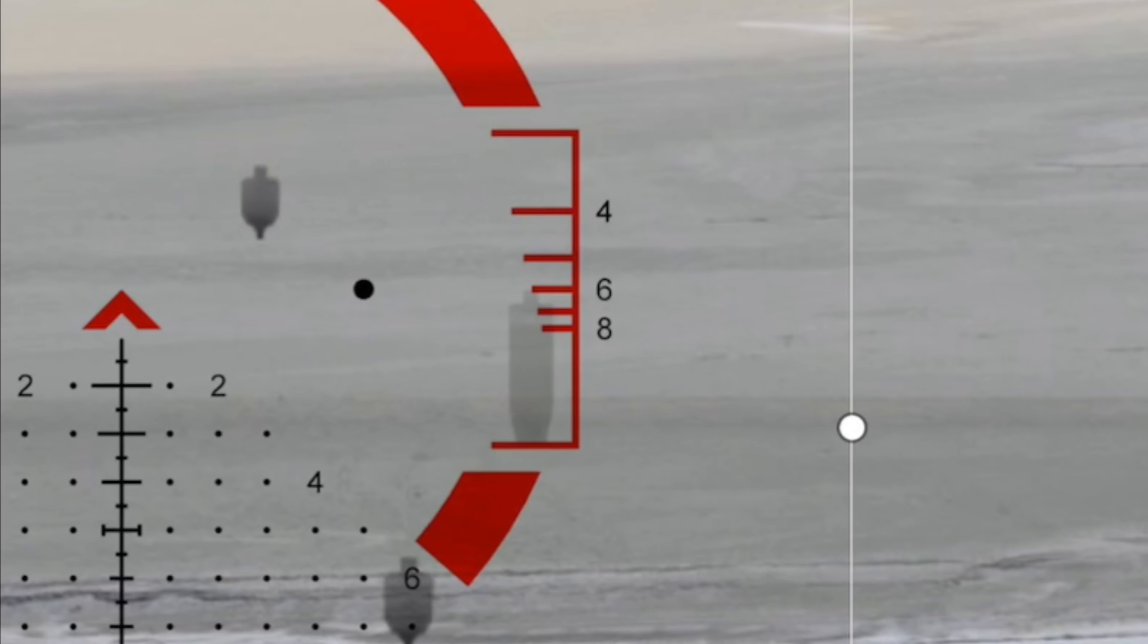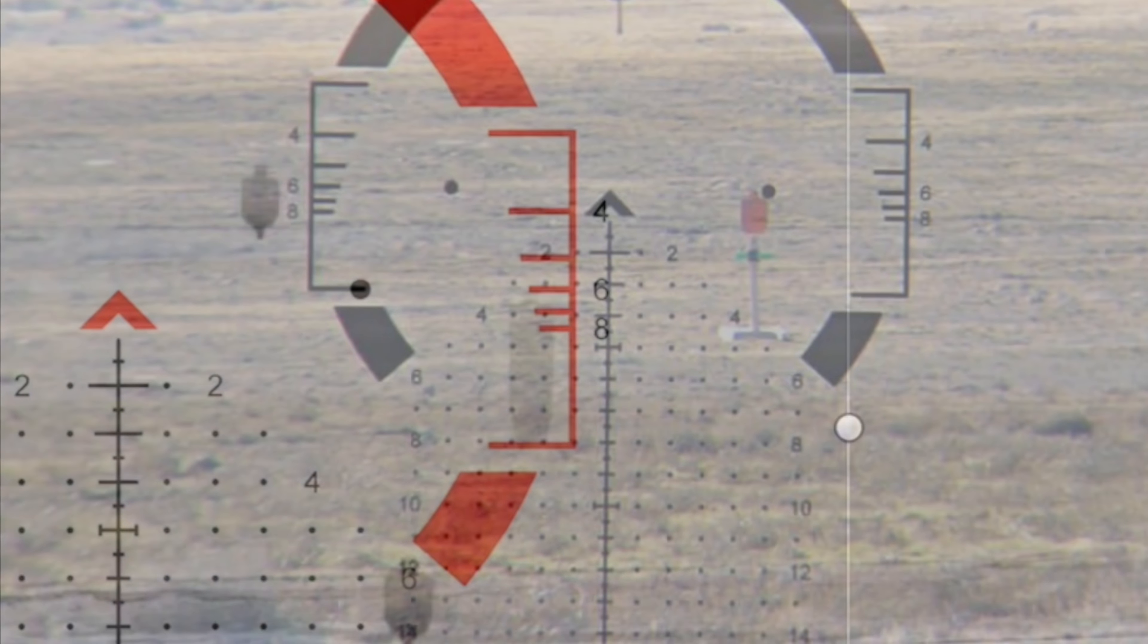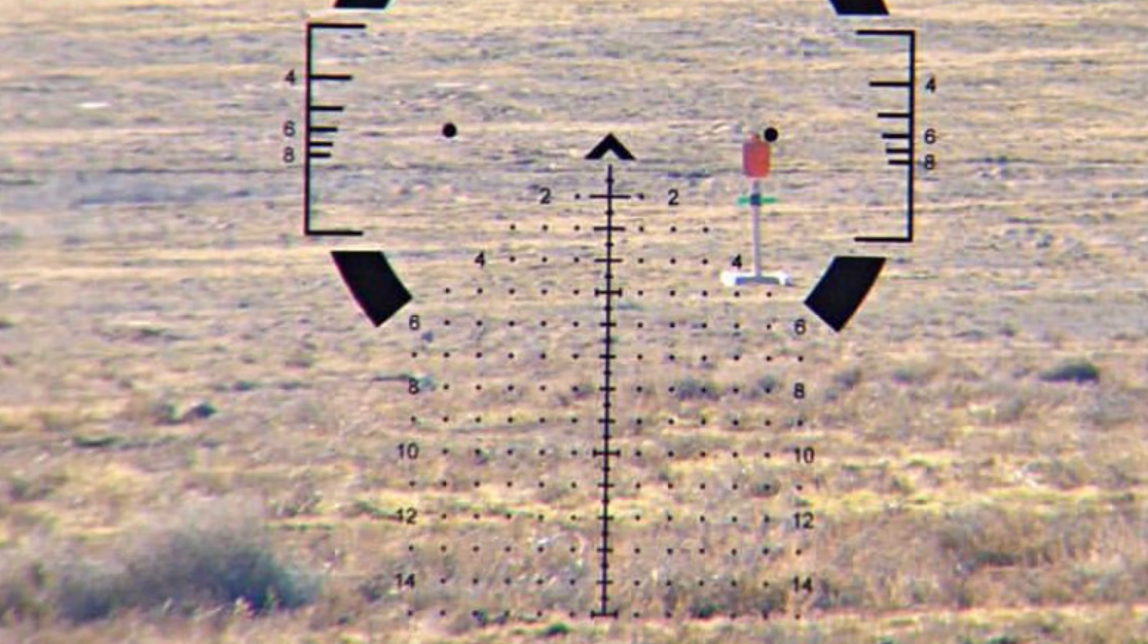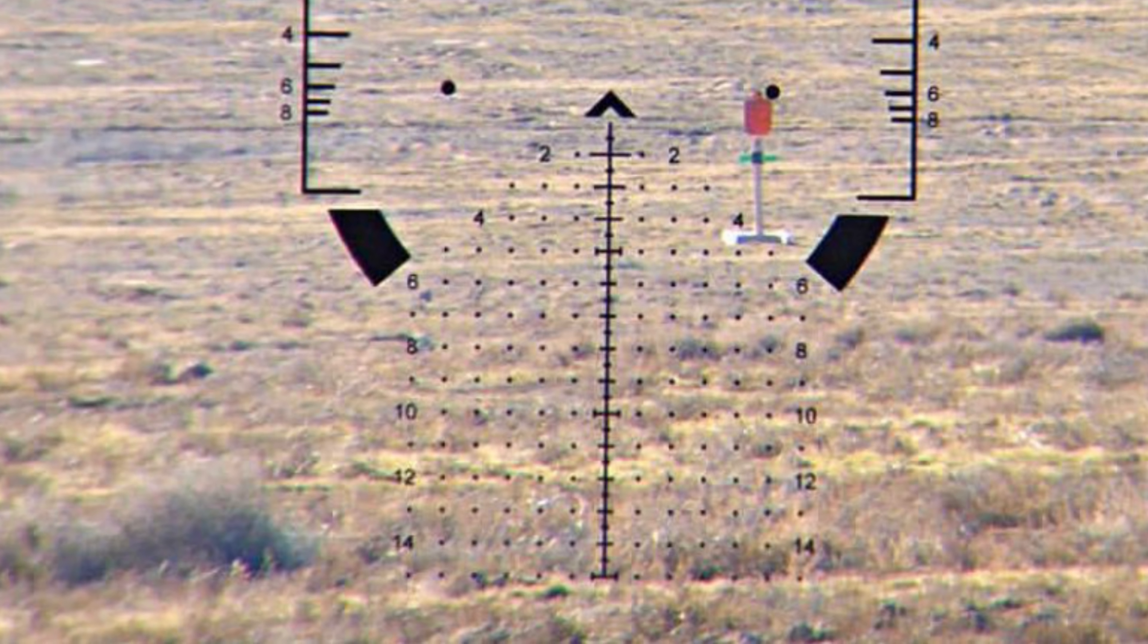Simply put the bottom of the target on the bottom line there and range upwards. You could tell this target is 600 yards away. The reticle gives you over 15 mils of holdover, so that'll get you well past a thousand yards.